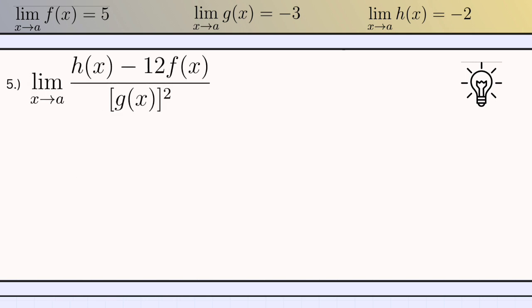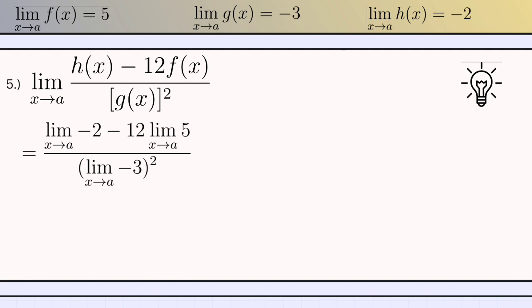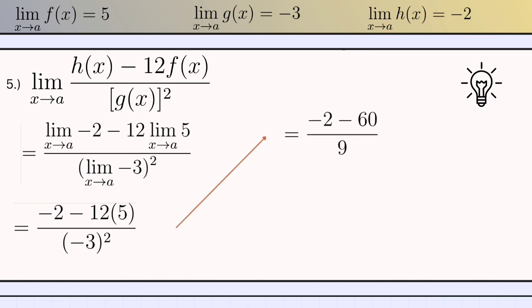Let's proceed to our last problem, number 5: the limit of h of x minus 12 times f of x, over g of x squared. First, substitute the corresponding values: the limit of negative 2 as x approaches to a, minus 12 times the limit of 5 as x approaches to a, squared. Negative 12 is on the left side of the limit because of theorem number 3. Using theorem number 1 where the limit is the constant itself, the answer would be negative 2 minus 12 times 5, divided by negative 3 squared. Simplifying: negative 2 minus 60 divided by 9, which equals negative 62 over 9.